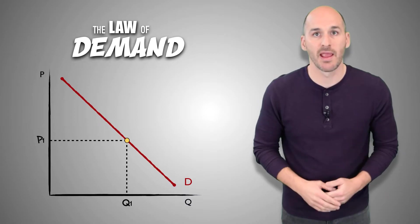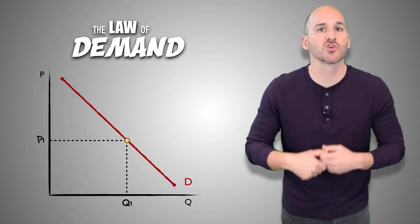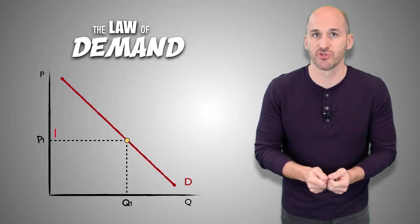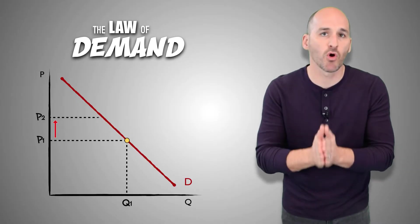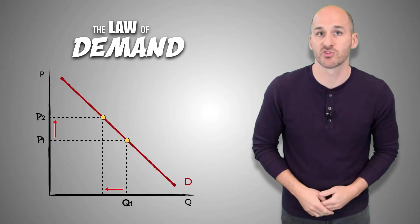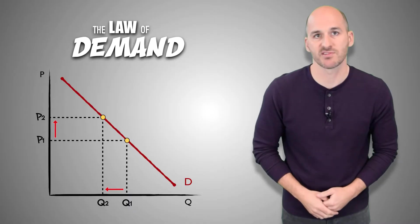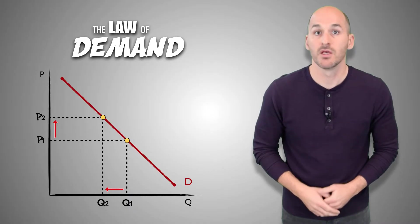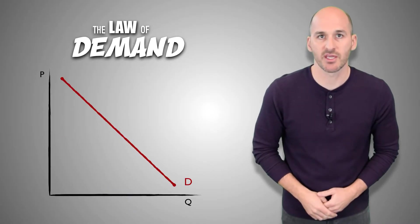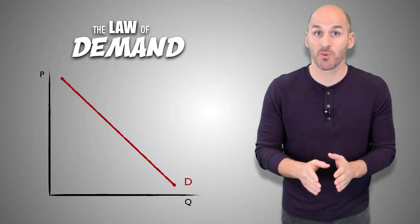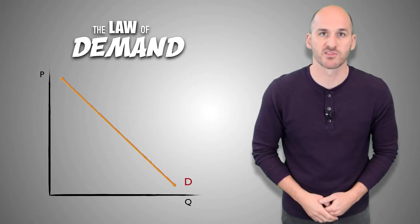On the other hand, because the first few units of output provide so much marginal utility, consumers will be more willing to buy the first few units of a good or service even at a higher price. So the law of diminishing marginal utility explains why the market demand curve is downward sloping.